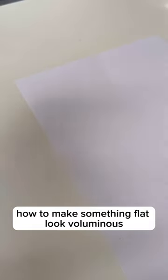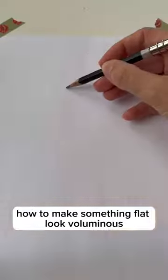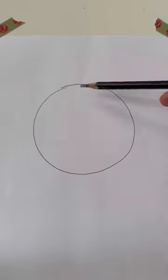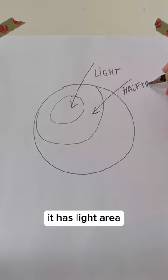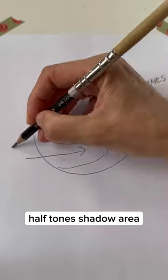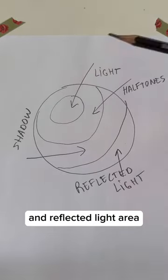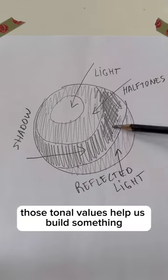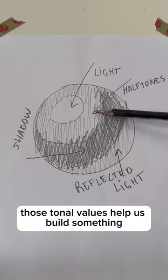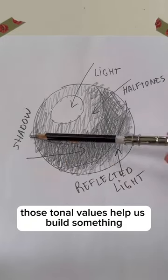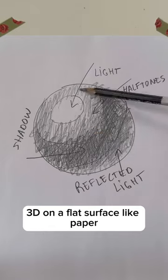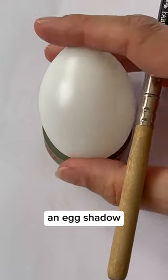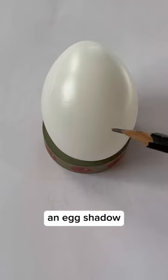How to make something flat look voluminous: a round subject has a light area, half tones, shadow area, and reflected light. Those tonal values help us build something three-dimensional on a flat surface like paper — for example, an egg with its shadow.